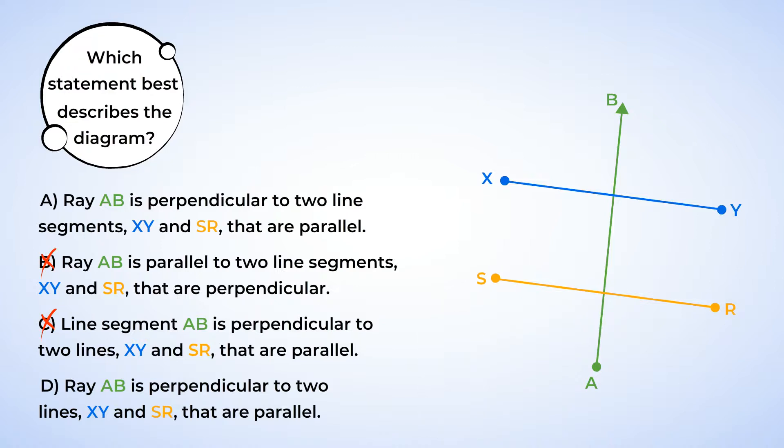Now let's look at the two statements we have left, A and D. Statement A labels XY and SR as line segments, while statement D labels XY and SR as lines. Well, if we look at the diagram, we can see that XY, S, and R are all endpoints, and this makes XY and SR line segments, not lines. So A is the correct statement.